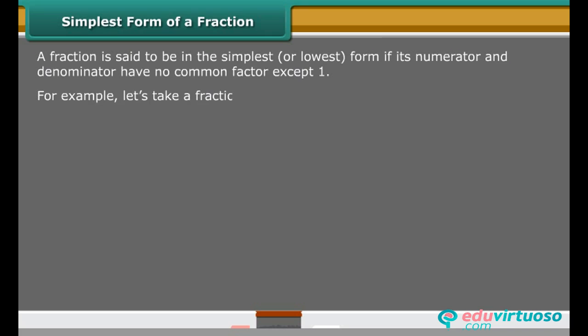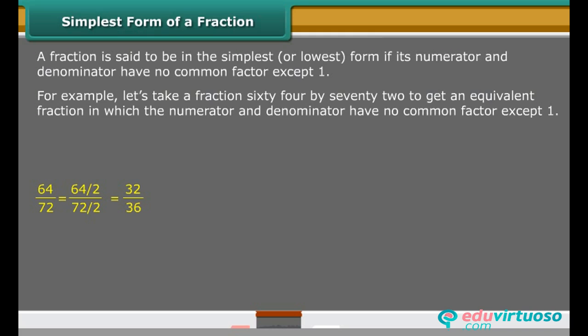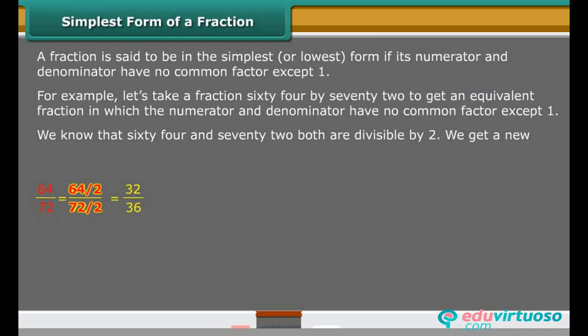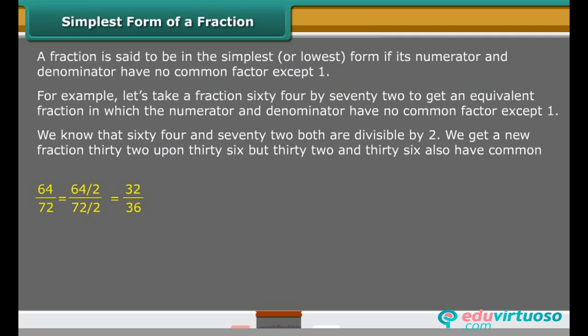Let us take a fraction 64 by 72 to get an equivalent fraction in which the numerator and denominator have no common factor except 1. We know that 64 and 72 both are divisible by 2. We get a new fraction 32 upon 36.